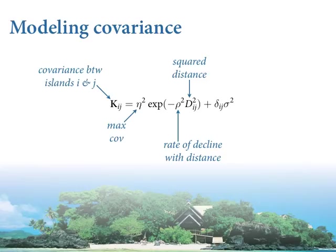If everything were Gaussian — this won't be because we've got Poisson at the top — but if the outcomes were also Gaussian I wouldn't even use Stan; I'd use GP stuff, probably, which is a great package. So let's explain this middle part and this convention. This functional form is often called the L2 norm, which is just a distance function in analytical geometry. It's a square distance function. What this induces is a half-Gaussian shape — a decay of covariance with distance.